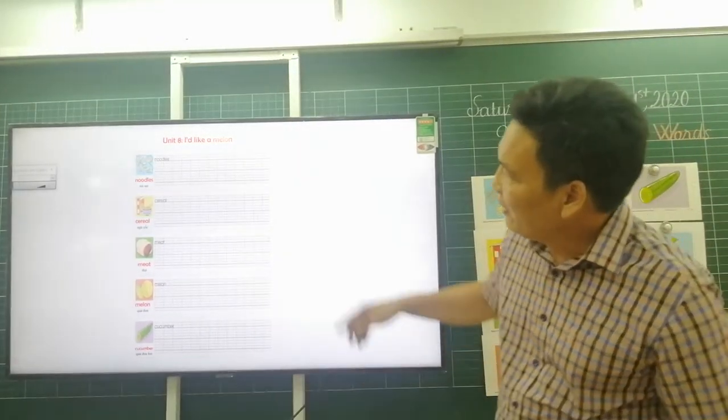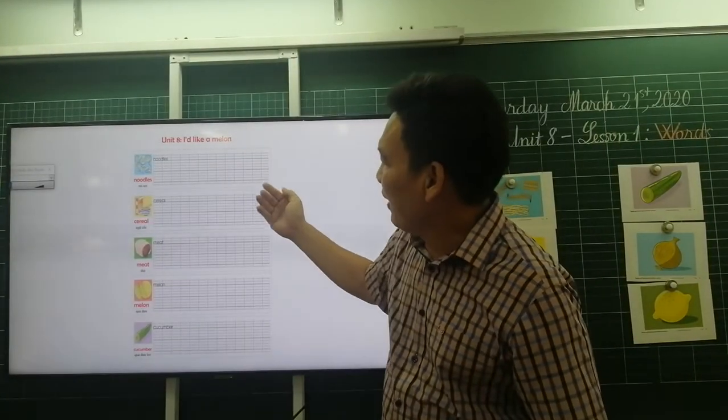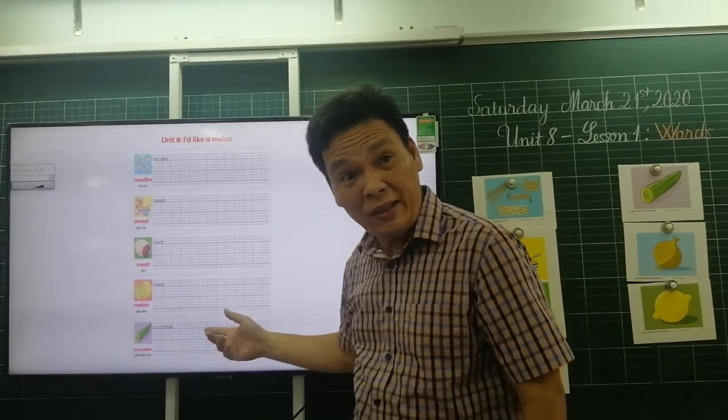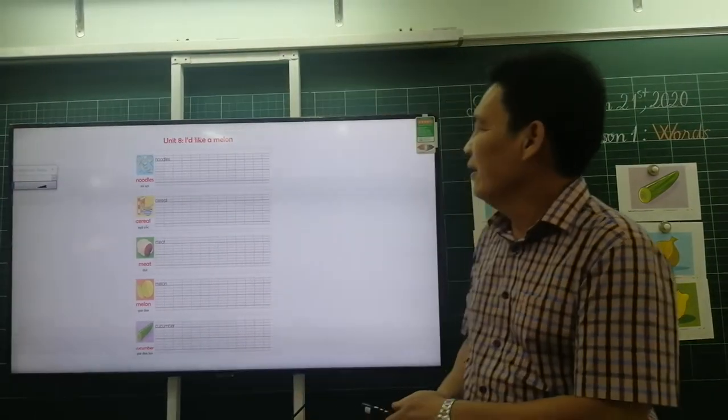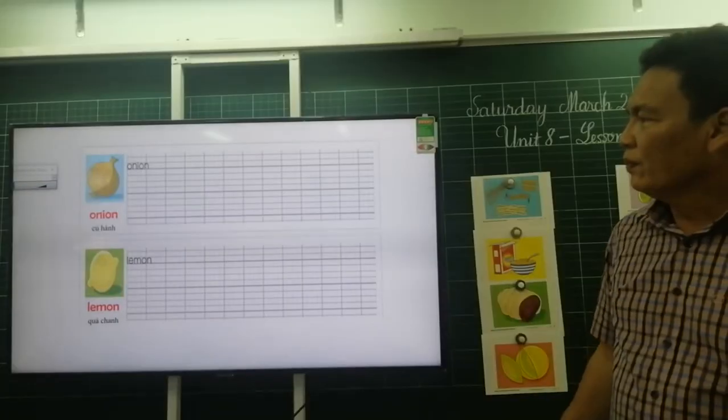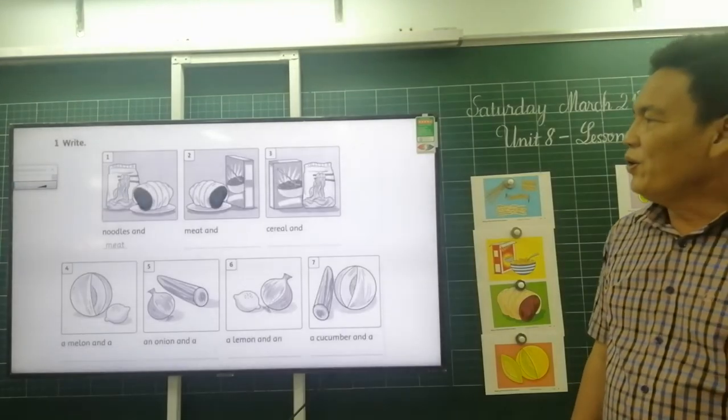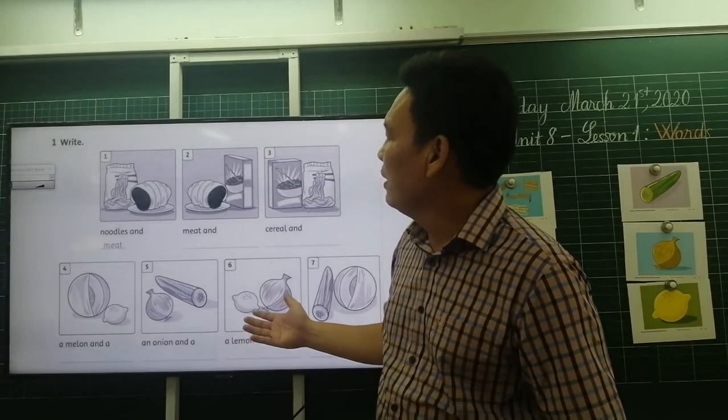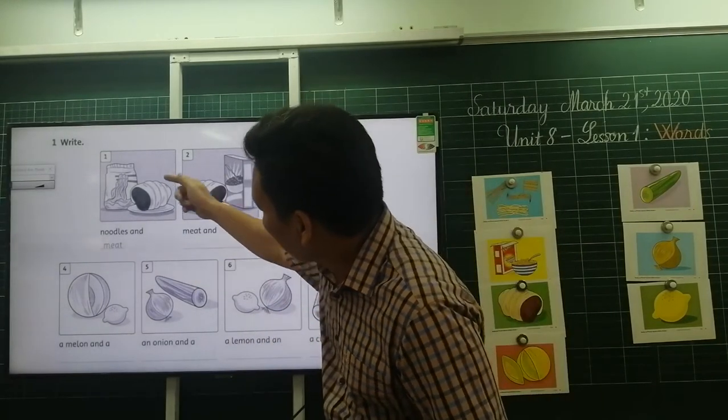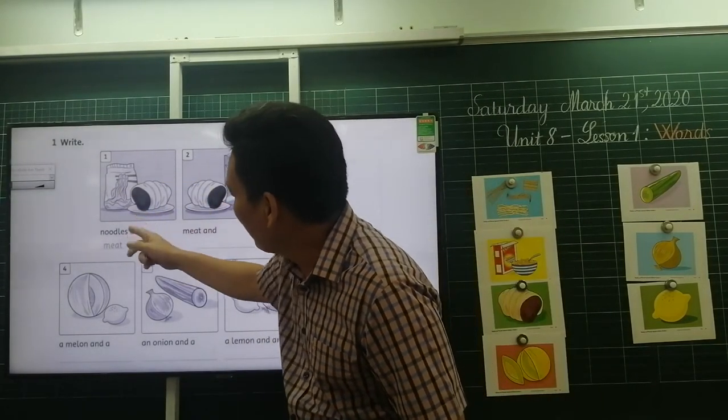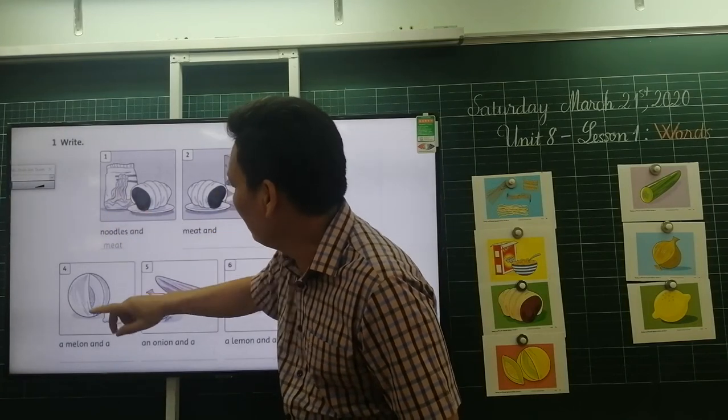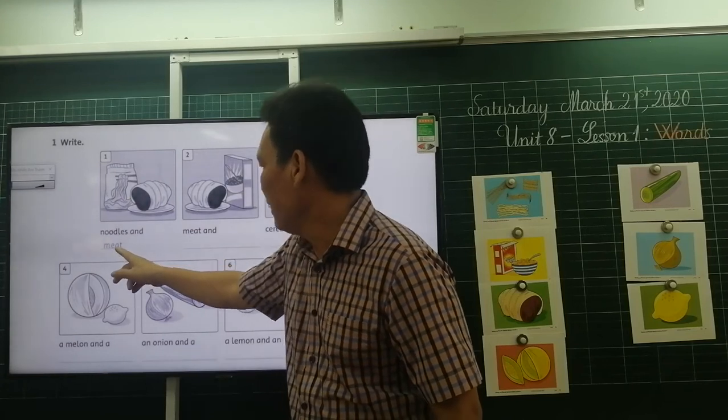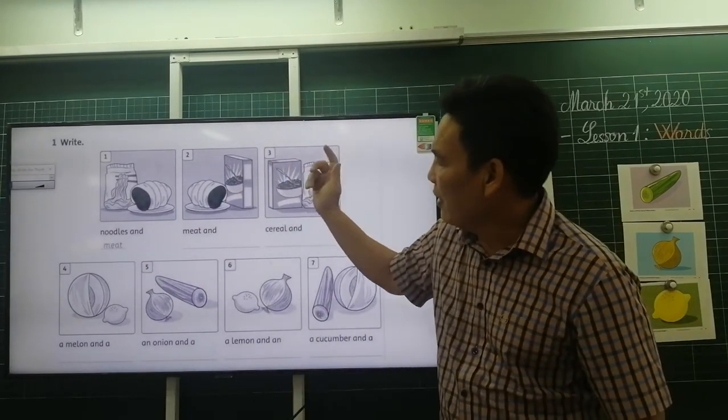Do the homework, okay? You can use the pen or pencil, write the words to practice writing. You also finish the homework on the workbook. Look at the picture carefully and write. For example, number one, noodle and meat, so you can write the word meat. Now look at the picture and continue.